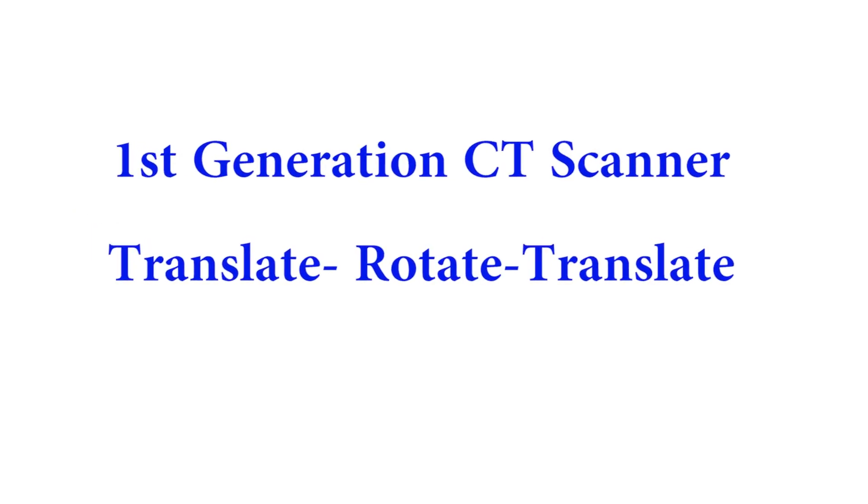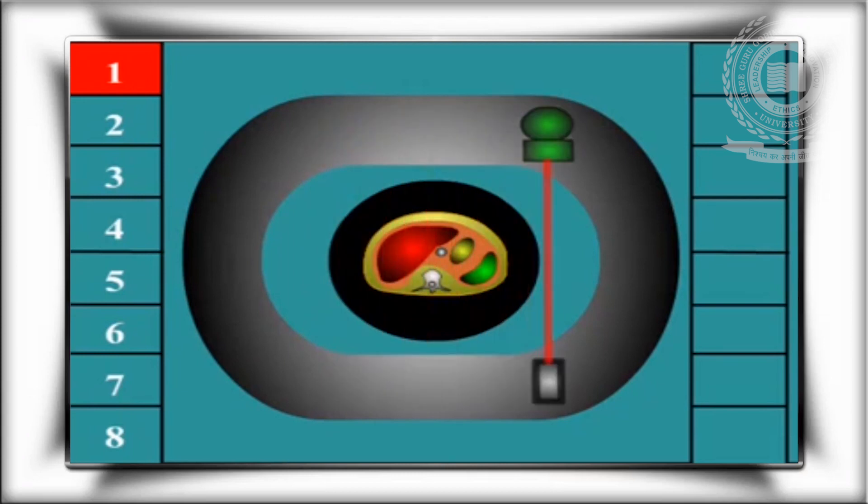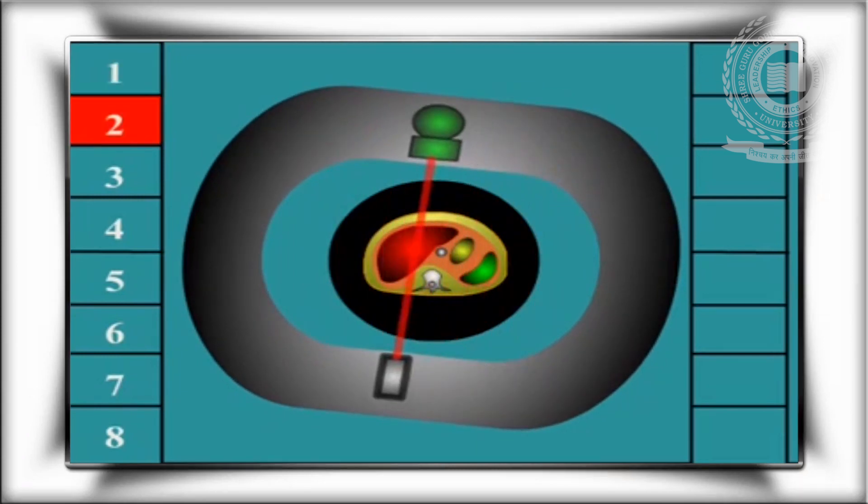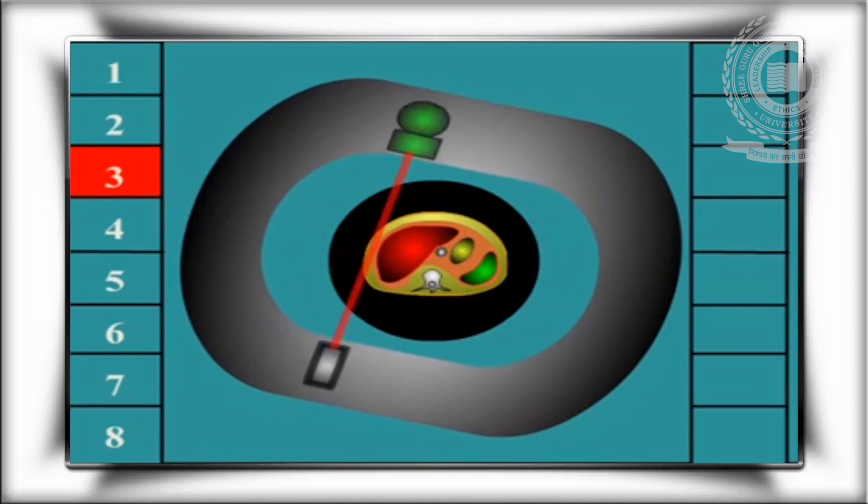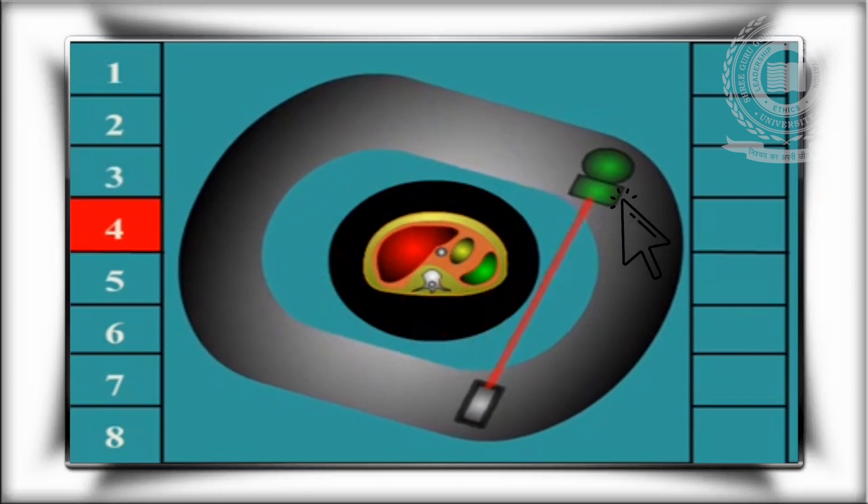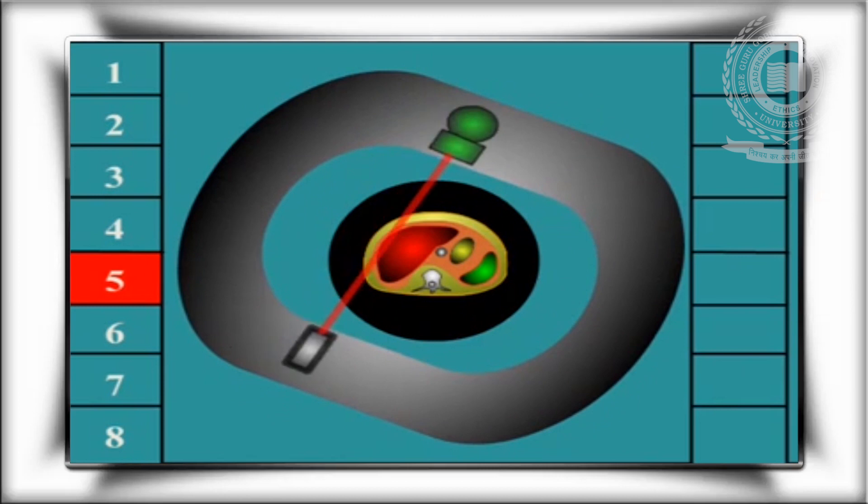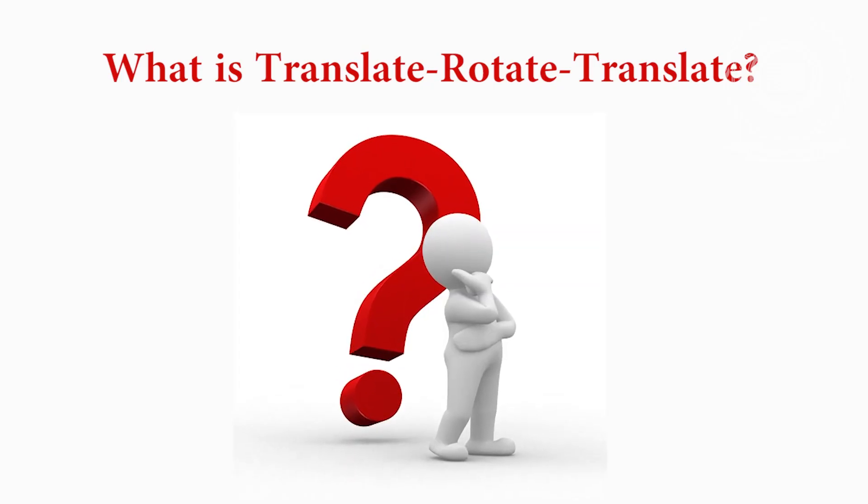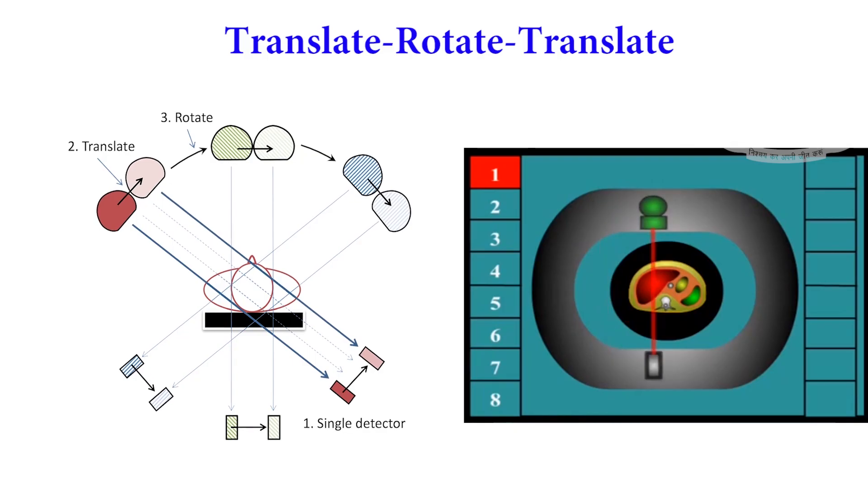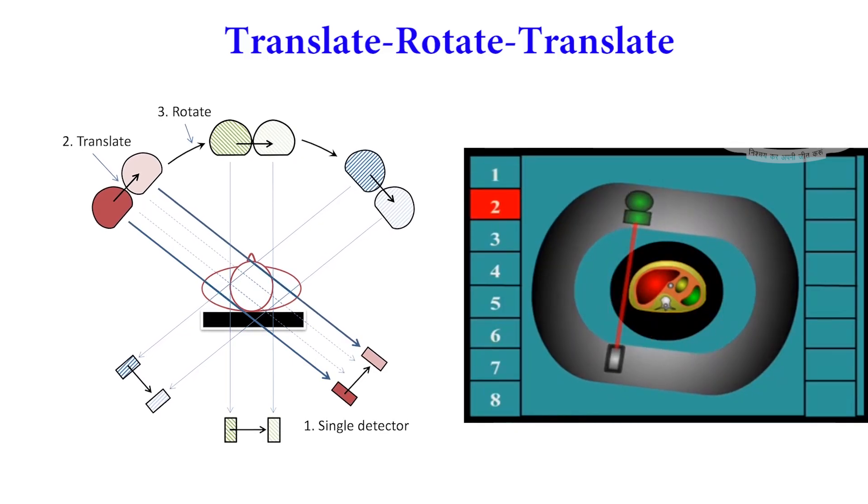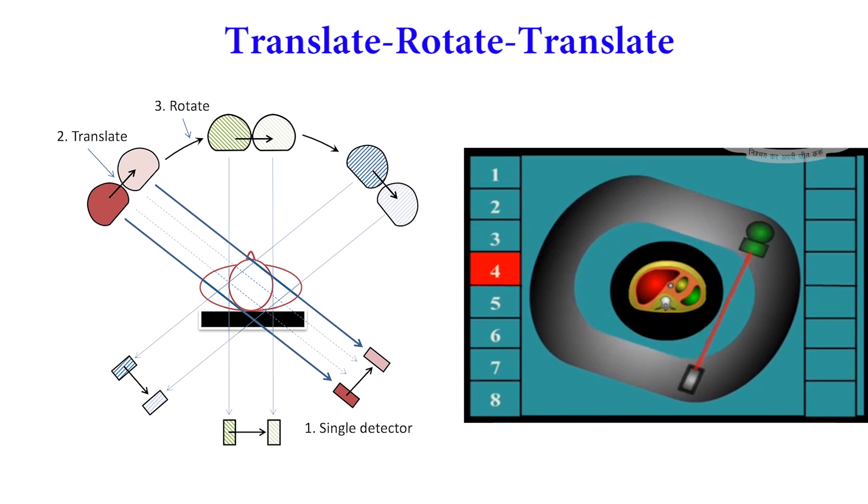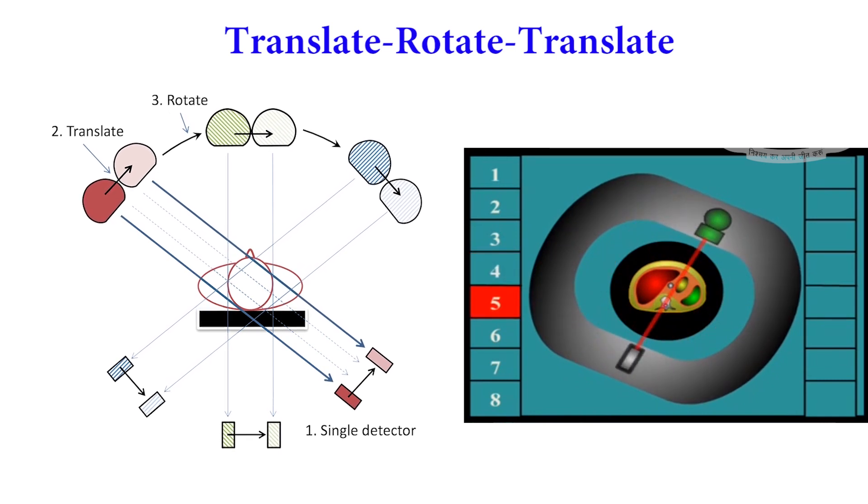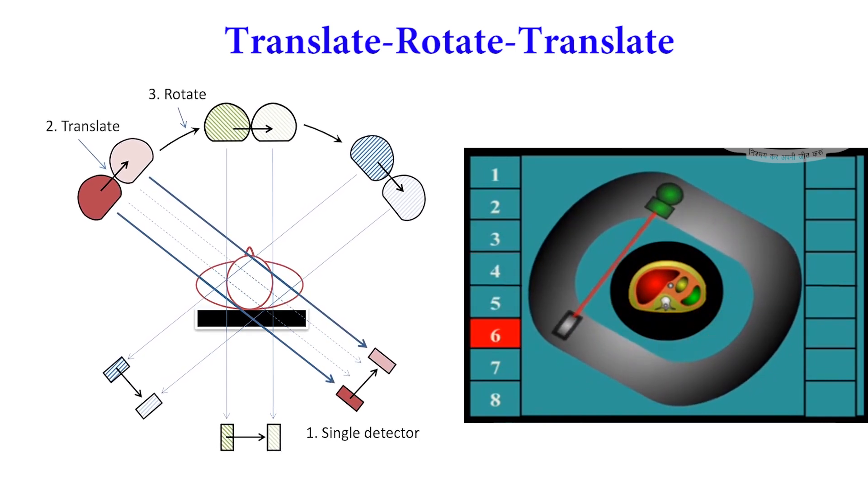First generation CT scanner. As you can see in this animation, first generation CT scanner is known as translate-rotate-translate. In this animation, green one is X-ray tube, red linear line is showing the X-ray path, and lower box is detector. What is translate-rotate-translate? Because in this equipment, X-ray tube first moves in translate motion, then rotates, and again moves in translate motion around the patient.